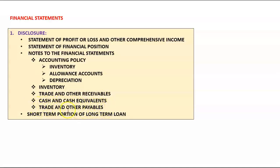For trade and other payables, the note starts with trade creditors balance, less allowance for settlement discount on creditors, giving net trade creditors, then adds other creditors such as income received in advance, accrued expenses, and the VAT control account if it has a credit balance. Regarding the short-term portion of a long-term loan: if the maturity date is longer than 12 months after year end, it is a non-current liability. However, any portion repayable within the next 12 months must be shown separately as the short-term portion of the long-term loan under current liabilities.